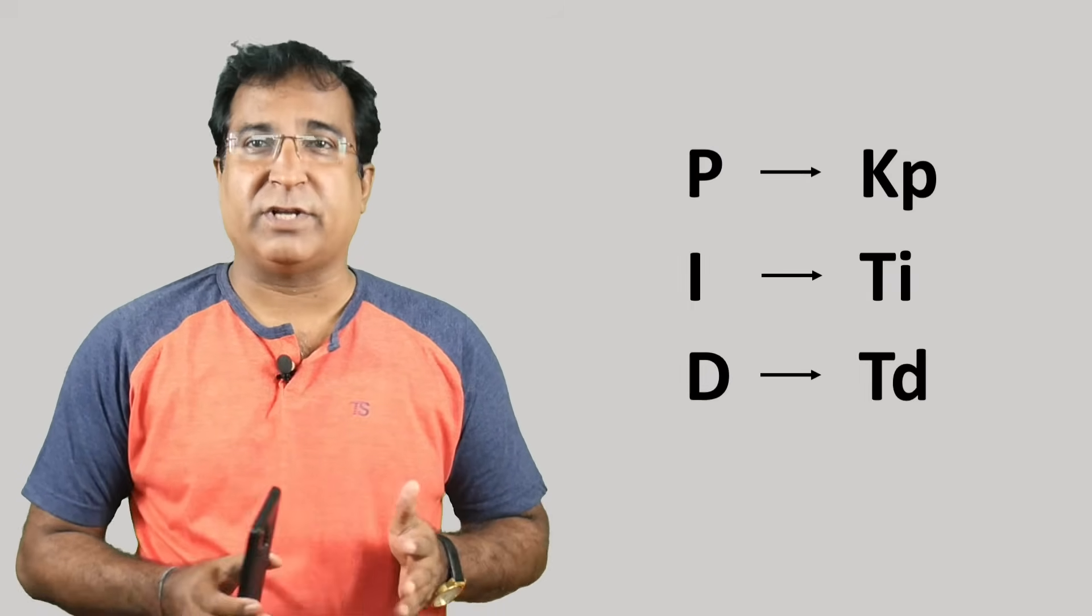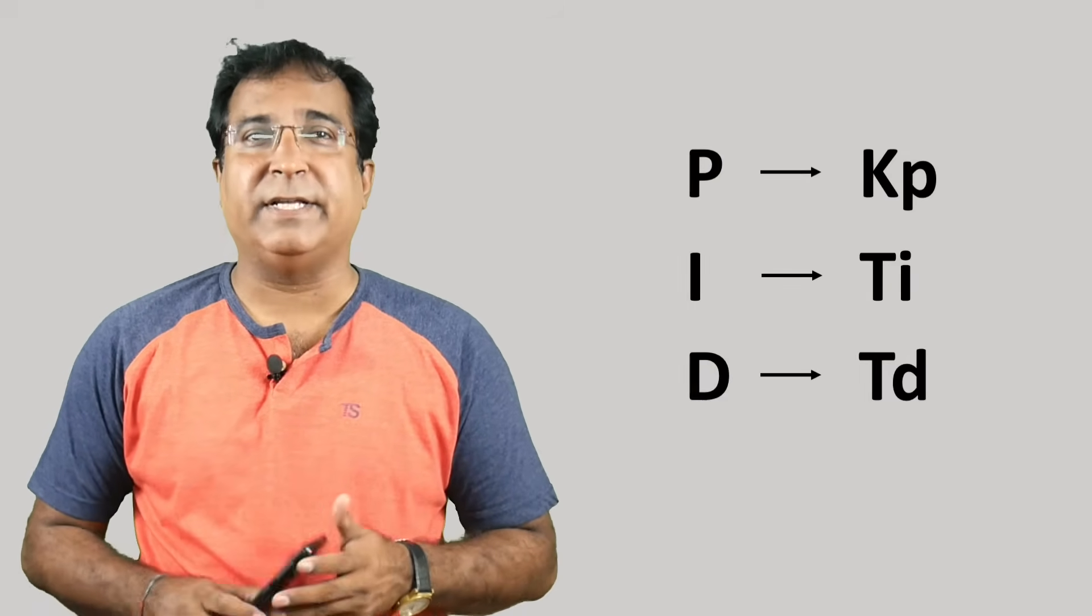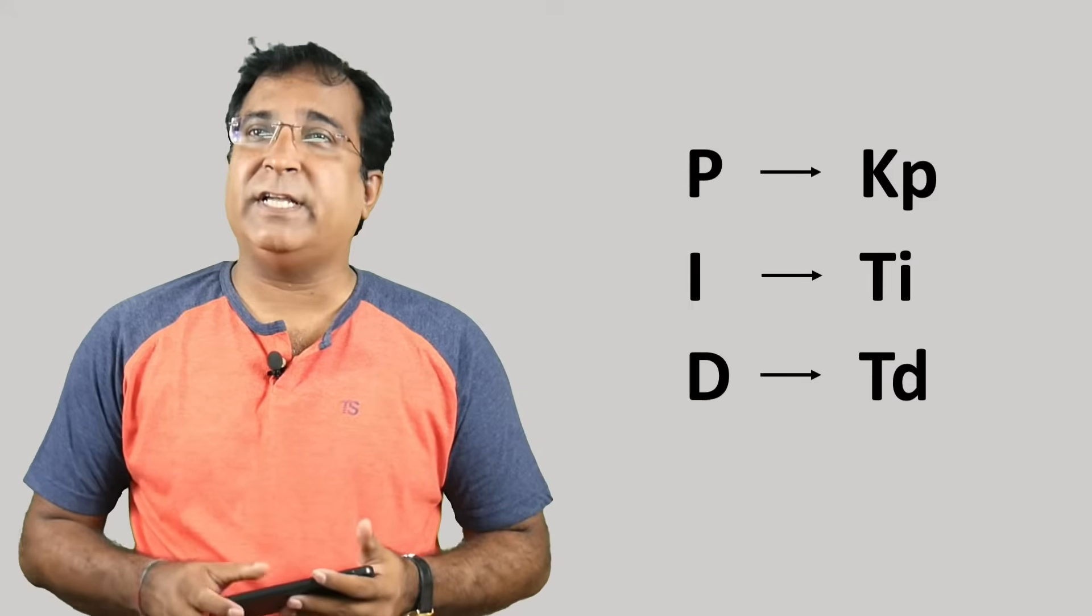There are three important parameters: proportional gain, also called proportional band, I is the integral time, and D is the derivative time, which govern the controller output to the final control element.